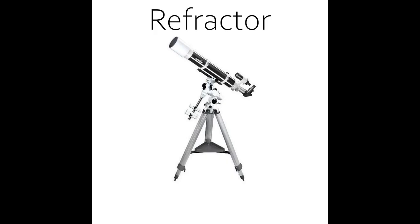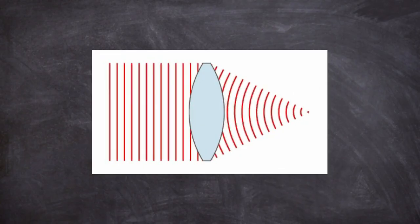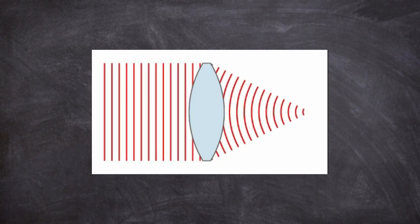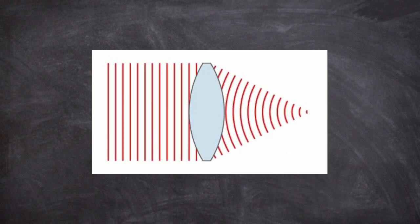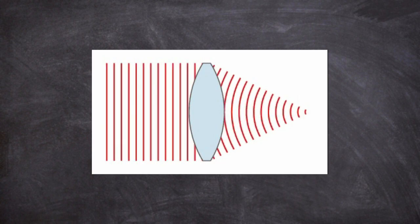The first big category are the lens scopes or refractors. They use a primary lens with a given aperture to collect the light. The main mechanism behind refractors is the ability of lenses to refract, hence the name, incoming light in such a way that in theory it will be focused on a single point behind the lens.